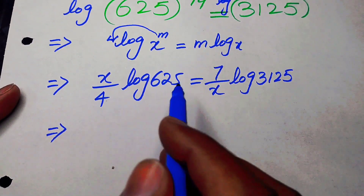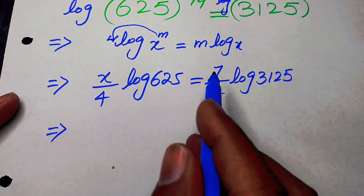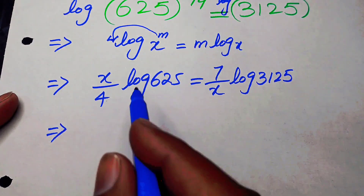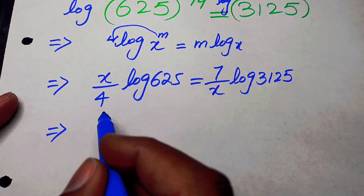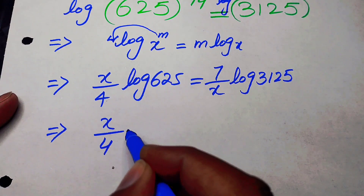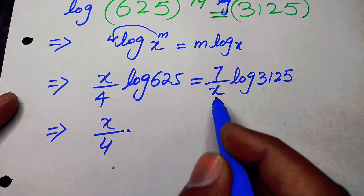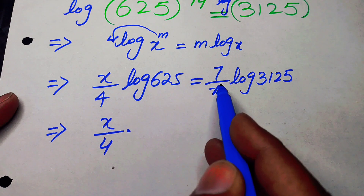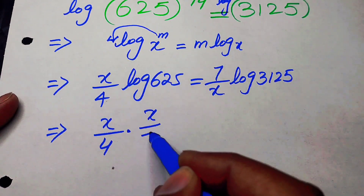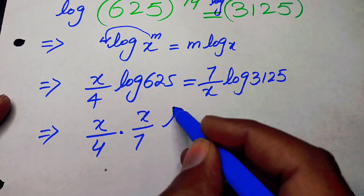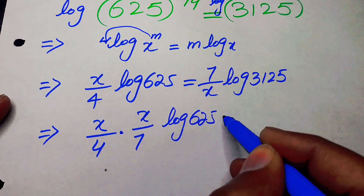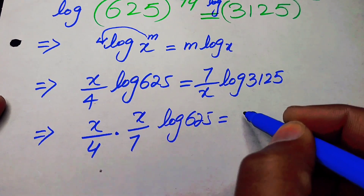We take the terms including x on one side and the logarithmic terms on the other side. When we bring 7 over x to the left-hand side it becomes x over 7, giving us x over 7 times log 625 equals log 3125.